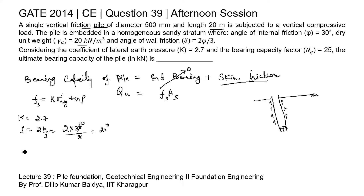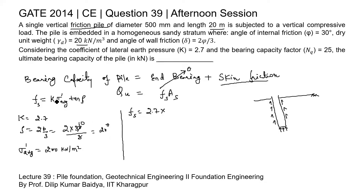Substituting the values, σ_average is 200 kN/m². Now calculating fs: fs = K × σ_average × tan(δ) = 2.7 × 200 × tan(20°) = 196.544 kN/m².